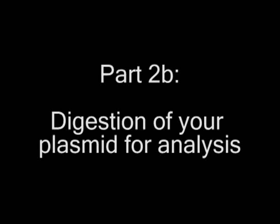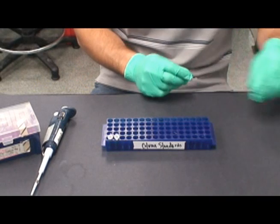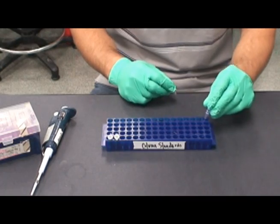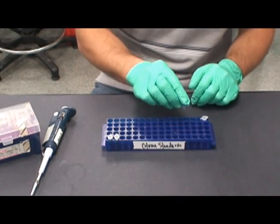Now it is time to digest your plasmid for analysis. We have labeled two 0.5 milliliter microfuge tubes. The first one, PUC19 and Hindi 3, the other one, PUC19 undigested.